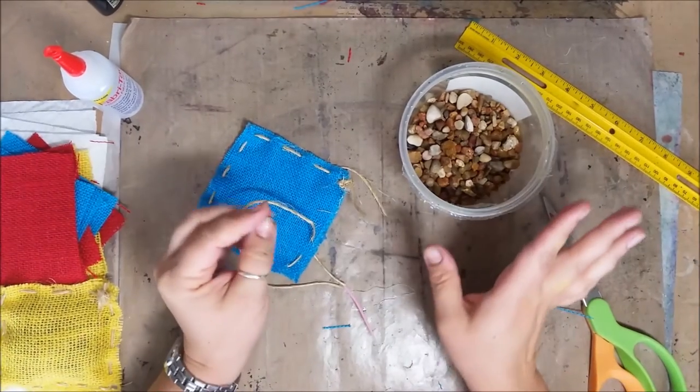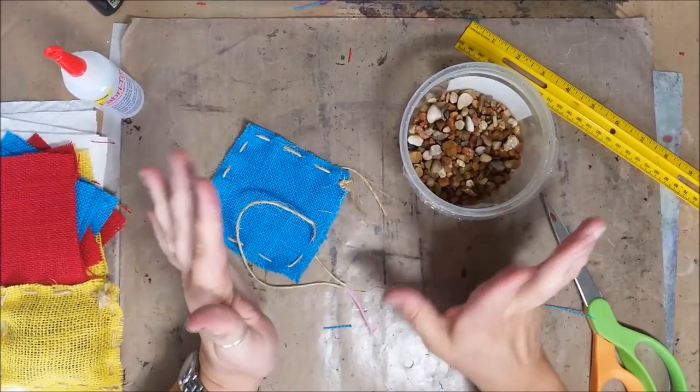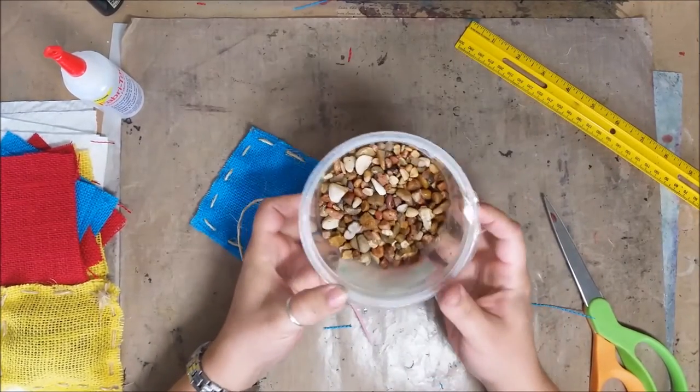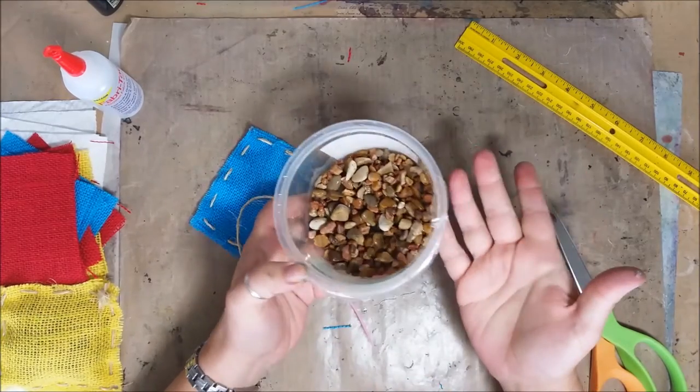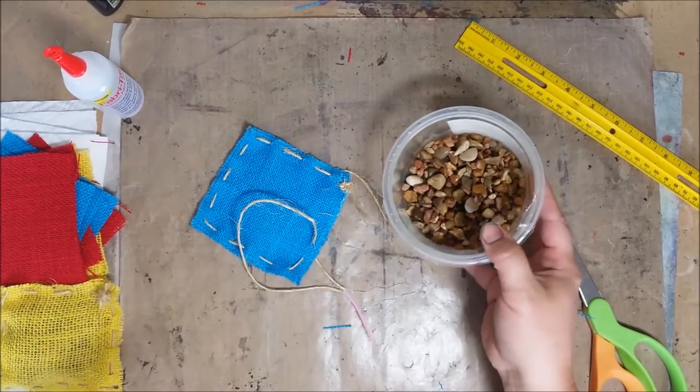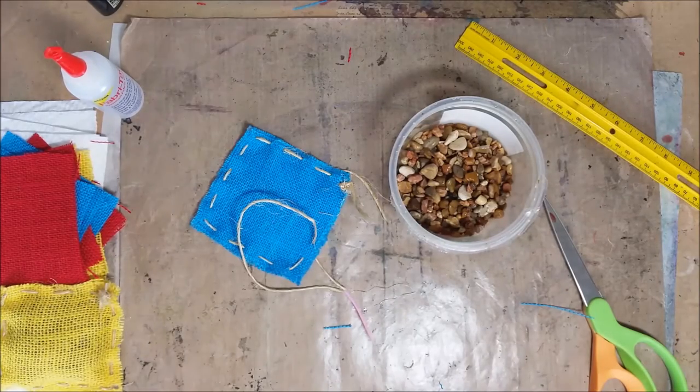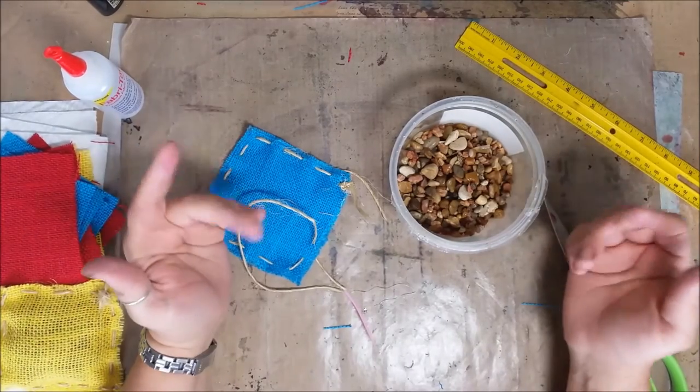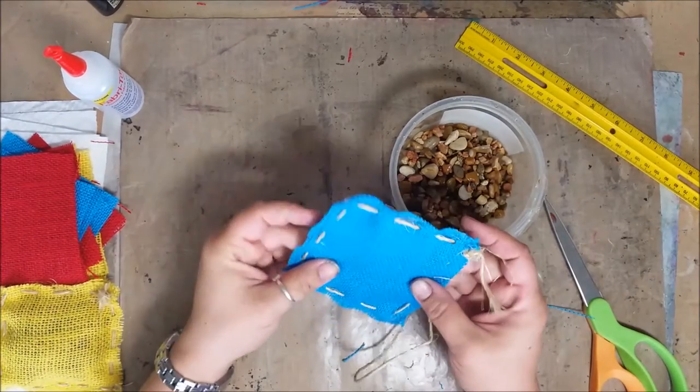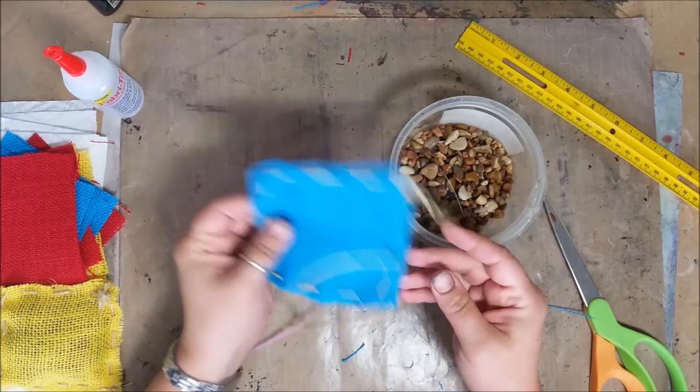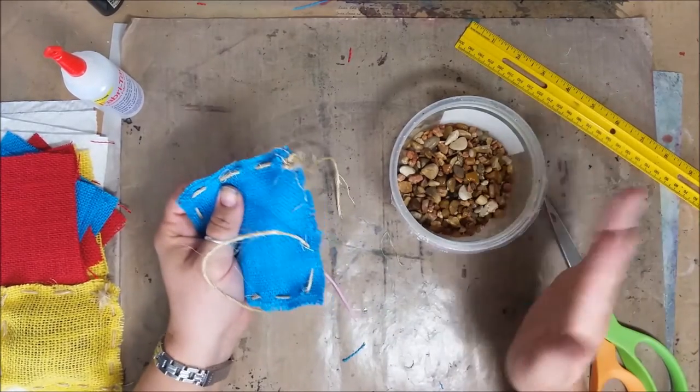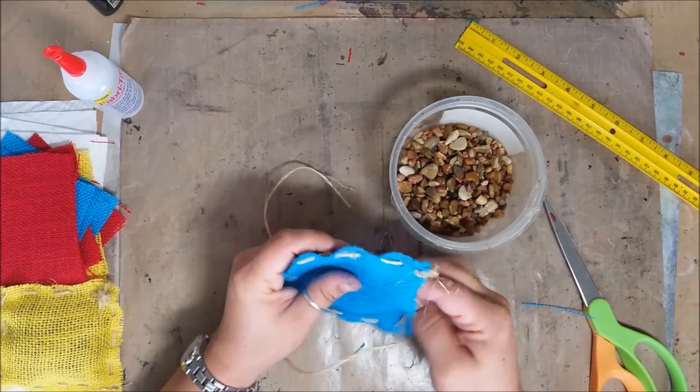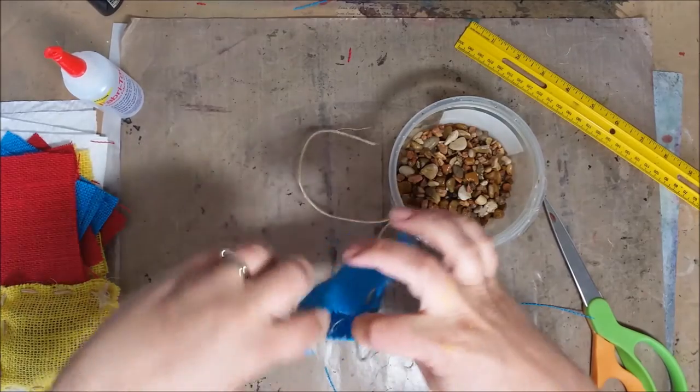I know traditionally beanbags, obviously you put beans in them. Well, I'm of the logic that I like to use what I have on hand, and I have a ton of this little pea gravel, little rocks that I don't know what to do with. They were part of the landscaping that we switched around. So instead of going out and buying beans and possibly having them sprouting or getting gross in here or whatever, I'm going to use rocks because I don't care if the rocks get wet, they'll dry. If they get kind of gross I can hose them off. I'm not worried about them deteriorating and getting disgusting in here. So that's what we're using.